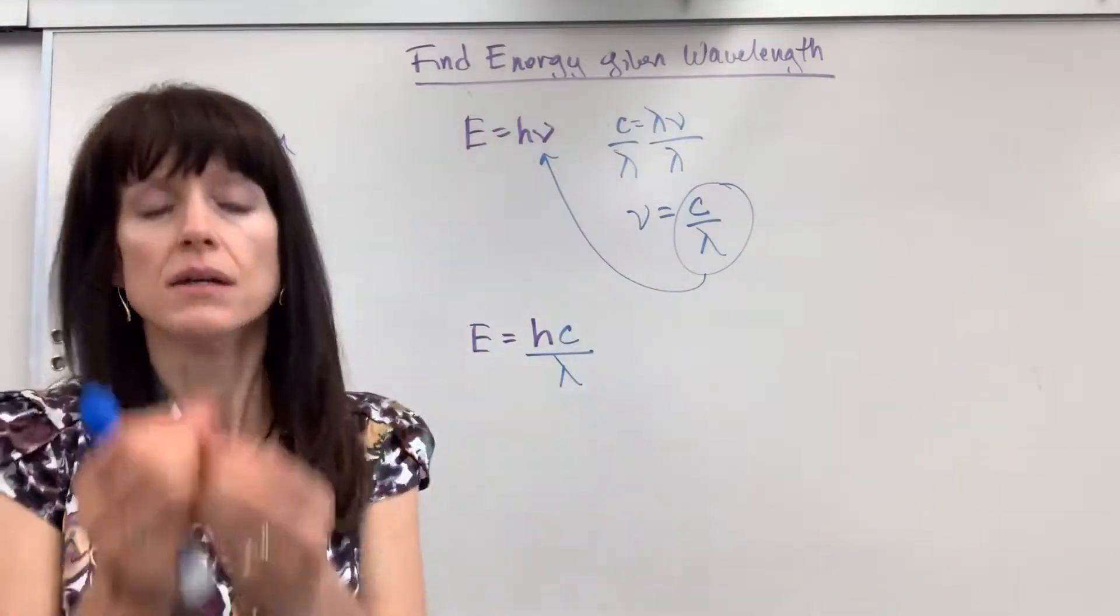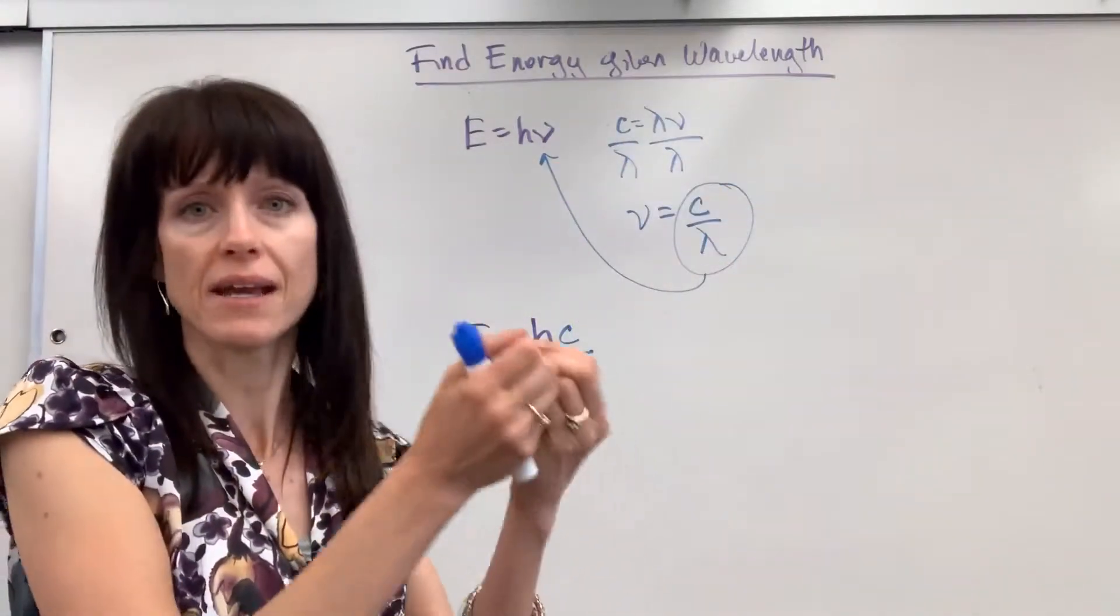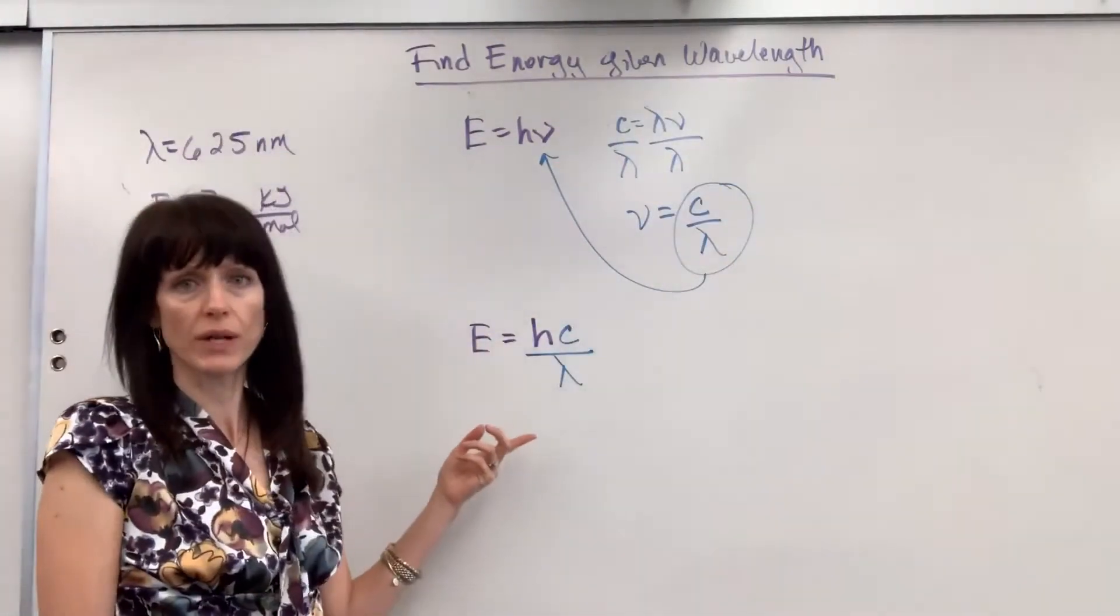Now this that I did right here, it's exactly what I just did in the example, except I did it as two steps. I did the speed of light equation and then I did the energy equation. This is combining the equations.